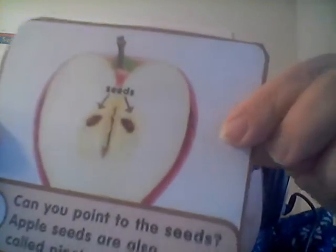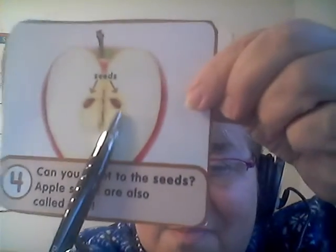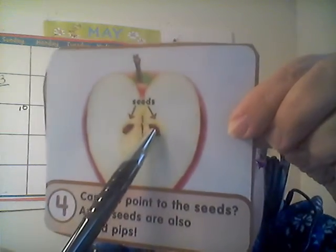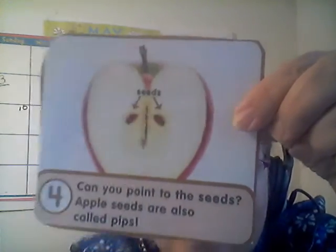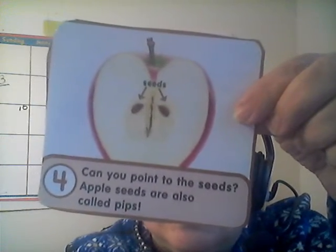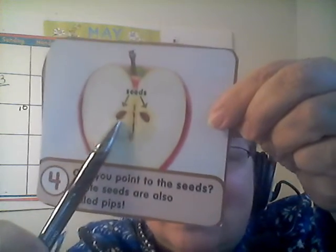Now if you cut the apple in half, you can see seeds inside. See the seeds inside? These are little seeds. Can you point to the seeds? A seed here and a seed here. Apple seeds are also called pips. These seeds are also called pips. Have you ever seen a pip inside your apple? A seed?